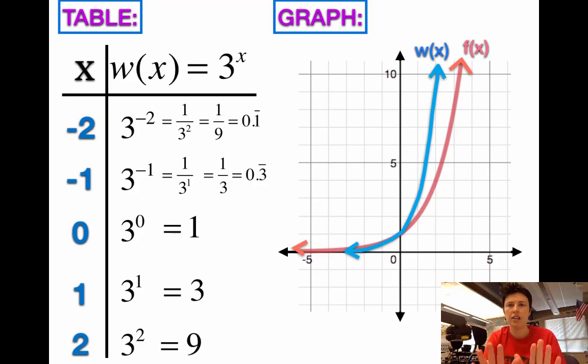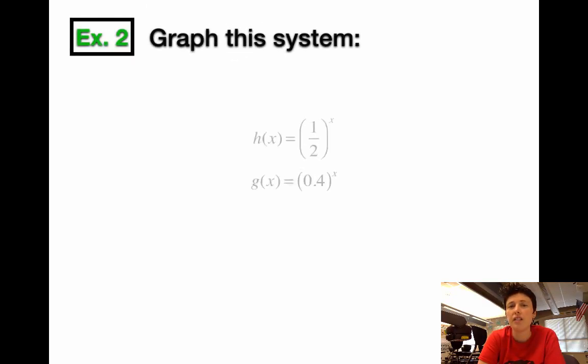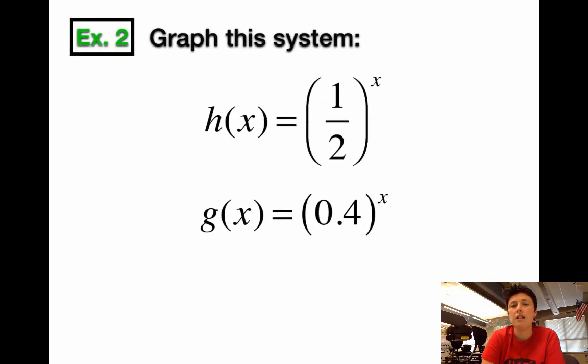Okay, so leaving that graph, we're going to come back to it in a little bit. So save it in your notes. We're going to do a second example now. And with our second example, we're going to graph a completely different system. This system is going to be h of x and g of x. h of x is going to be 1 half to the x power. Something new. And g of x is going to be a decimal. It's going to be 0.4 to the x power. And we're going to graph these two and see what they look like.